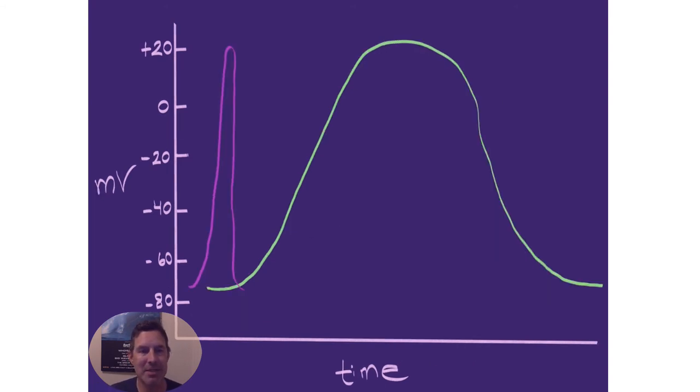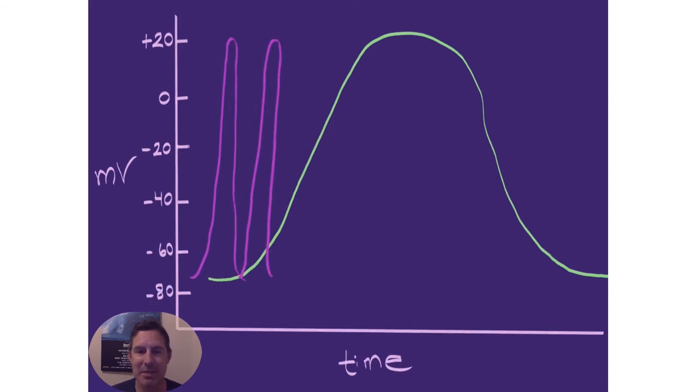But going back to this, this action potential only lasts about two milliseconds. Which means it's ending even before or just as this skeletal muscle is starting to contract. But as long as electrical activity has fully repolarized, as long as an action potential has fully repolarized and gotten back to the resting state, we can have another action potential.